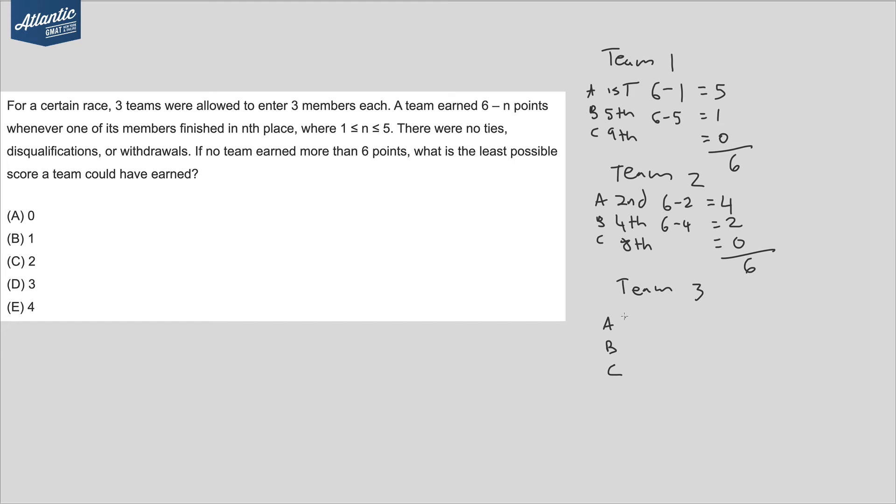Now we just put whatever's left for Team 3. So Team 3 has to have third place, which is three points. And then Team 3 is also going to have sixth and seventh, which both give you zero. So the answer is three.